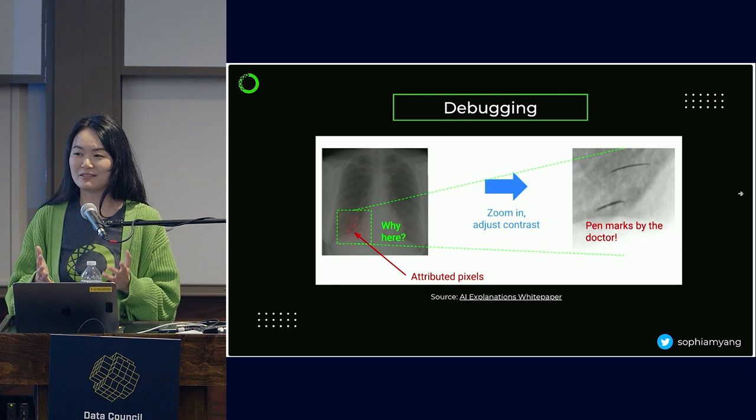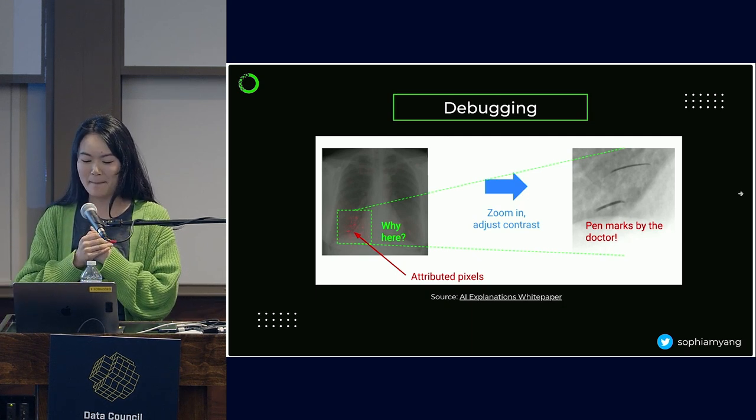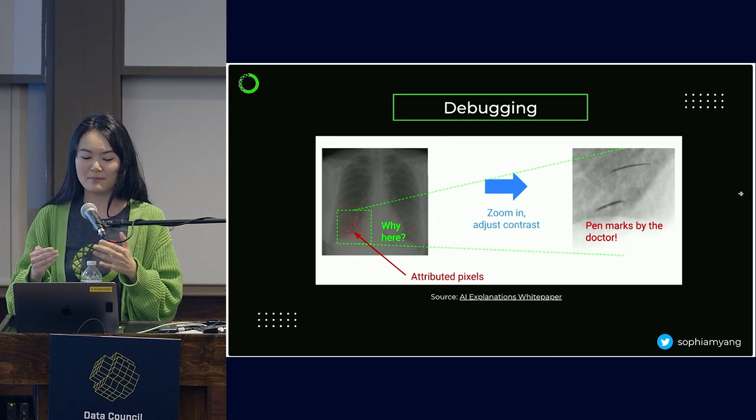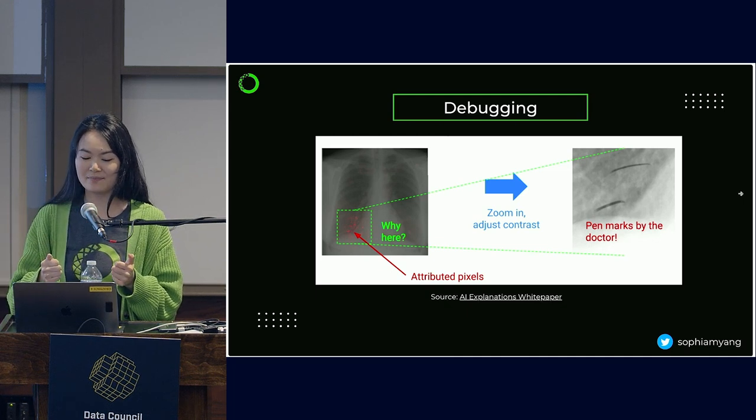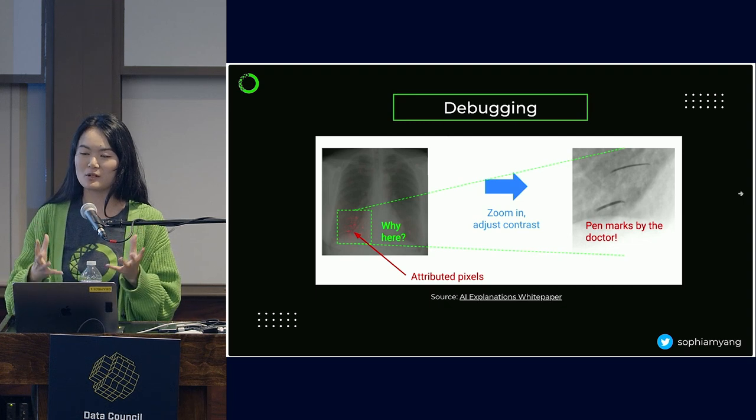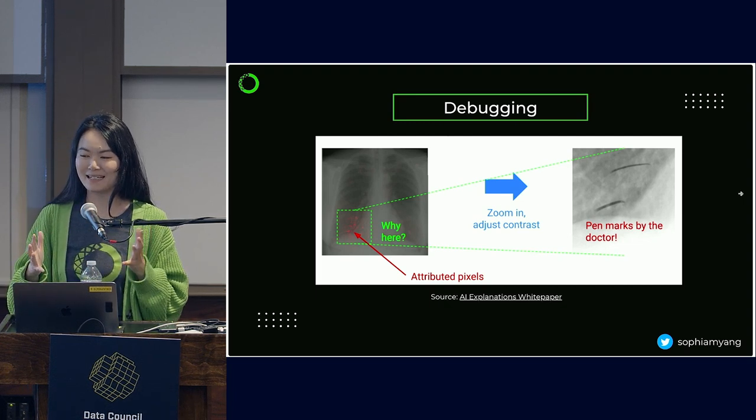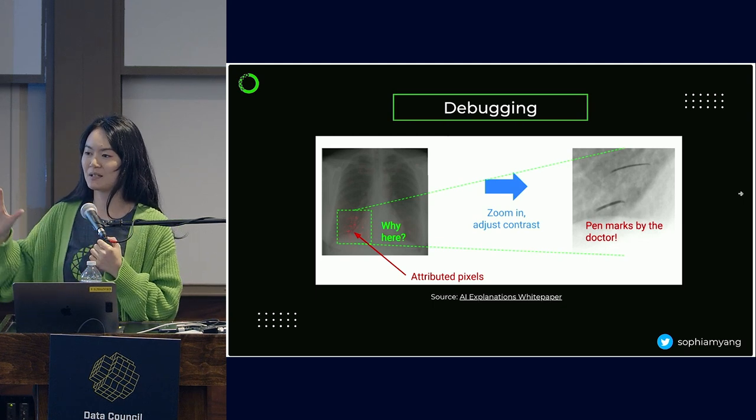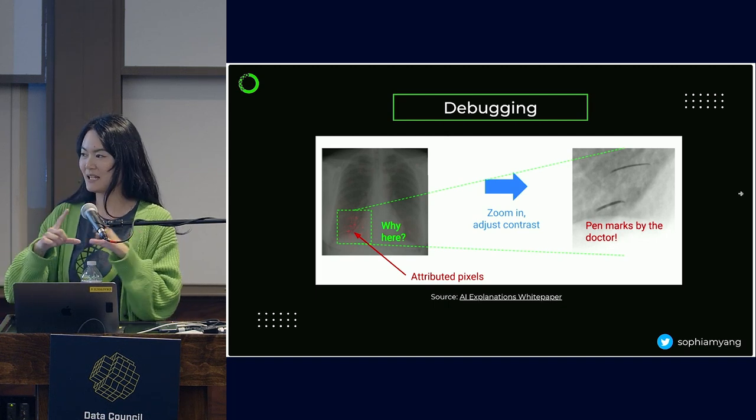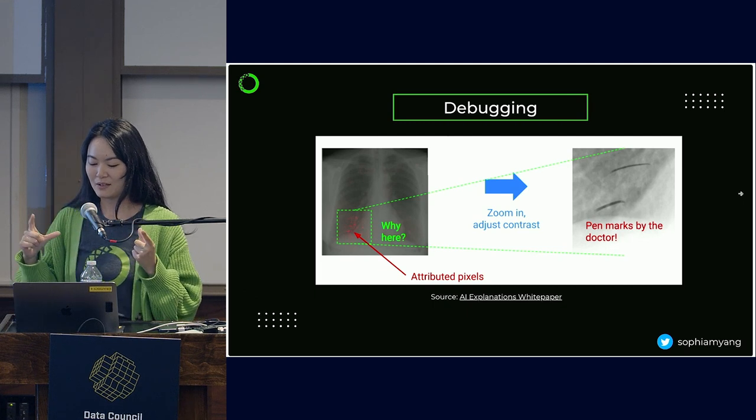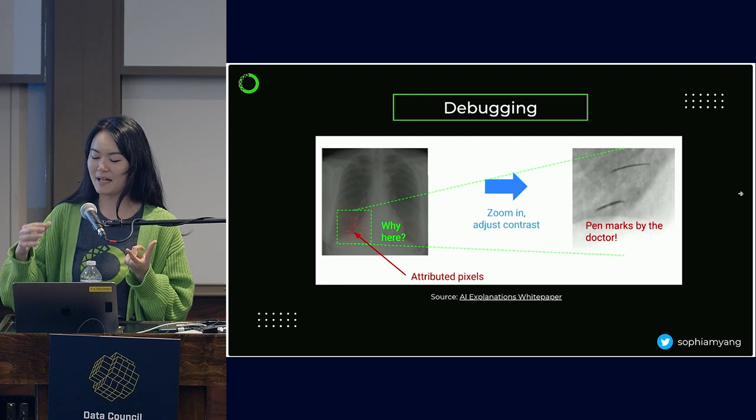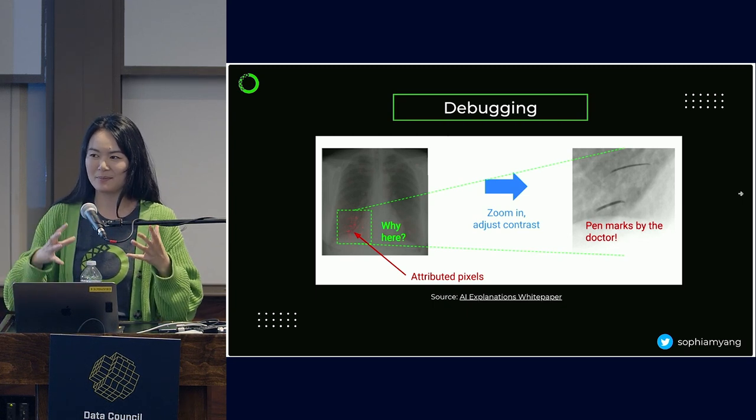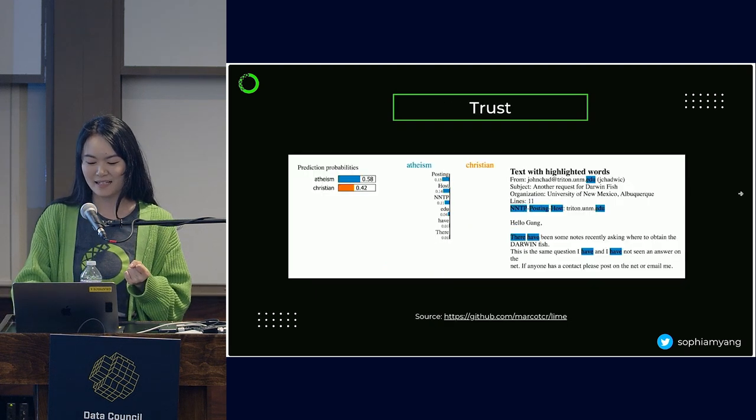Being able to explain your model is really hard, as you can see later in this presentation. But debugging might be even harder. Here's an example of an X-ray model where we're predicting diseases from patients' X-ray scan. Researchers found that the model performed perfectly during training and validation, but it doesn't really work in real life. So they want to know why. Researchers used integrated gradient to highlight the pixels that contributed to the model prediction. You can see the highlighted area to the left there in the square. And when you zoom in, you can see the model is not actually predicting diseases, but actually predicting the pin marks by the doctors. So that's quite interesting. Now with this integrated gradient method, you're able to tell why is my model wrong.